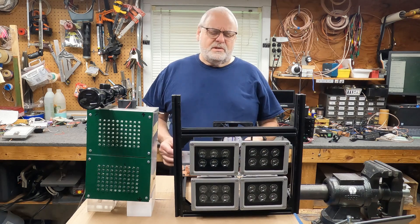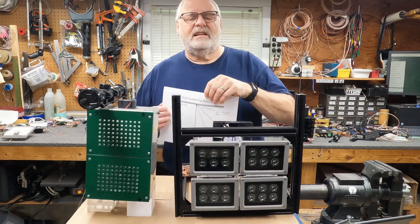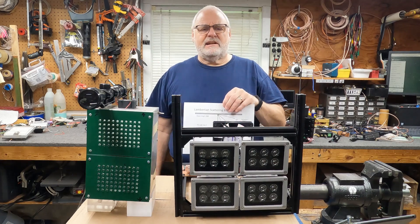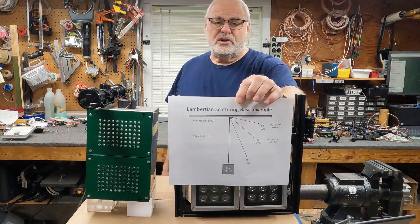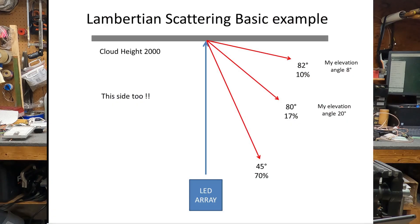I need somebody who knows about light scattering and things like that — why clouds are white, because of a type of scattering. I'm going to show you this first and interrupt the video to stick this up as a full frame while I talk about it. If you look at this diagram, this is kind of what happens with cloud scattering, or my best assumption as to what happens with cloud scattering.